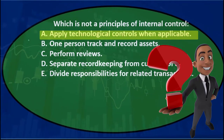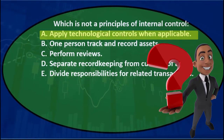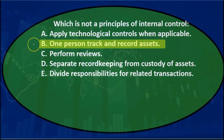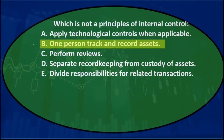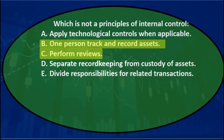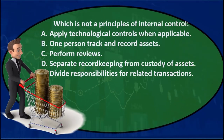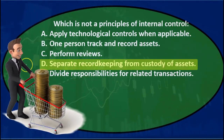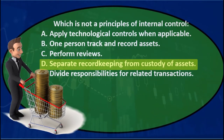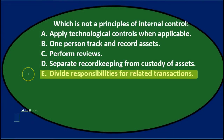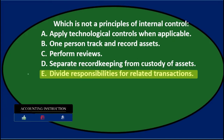The options are: A. Apply technological controls when applicable, applicable to a wide variety of situations. B. One person tracks and records assets. C. Perform reviews. D. Separate record keeping from custody of assets. Or E. Divide responsibility for related transactions.